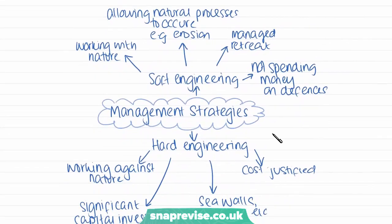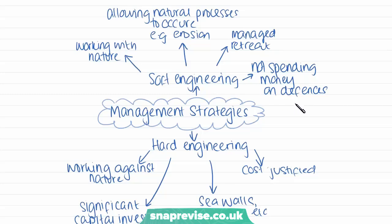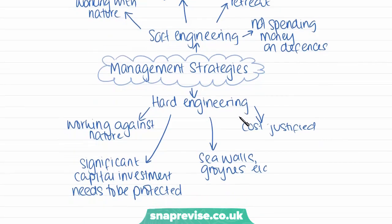We have two different types of management strategies: soft engineering and hard engineering. Soft engineering tries to work with nature, allowing natural processes like erosion to occur. Techniques include managed retreat — letting nature take its course without spending money on defences. Hard engineering is the opposite, working against nature using special technology such as sea walls and groins, which are expensive man-made flood defences.